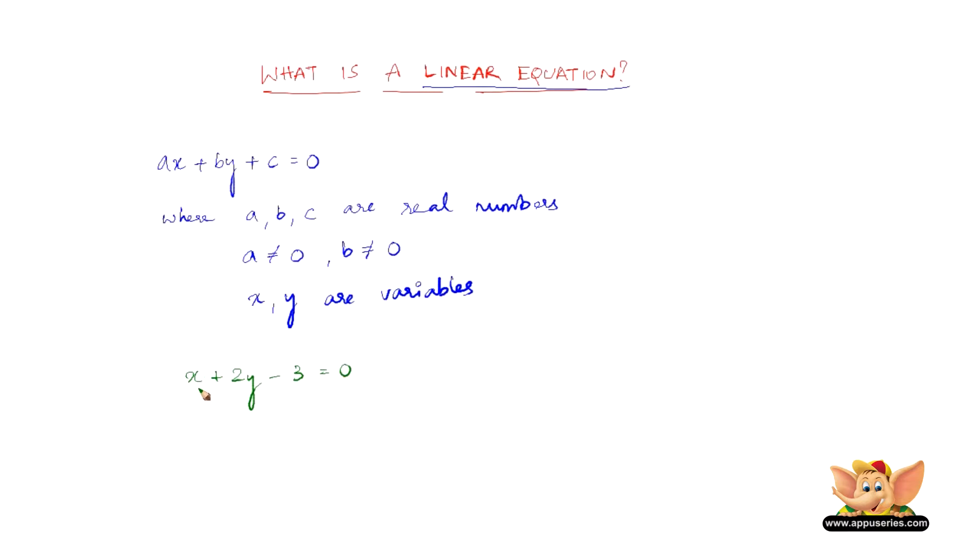Here, we can clearly see that x and y are variables. a, although it is not to be seen, it is 1 and it is not equal to 0. So a is 1, we've got b as 2, and then we've got c as minus 3.